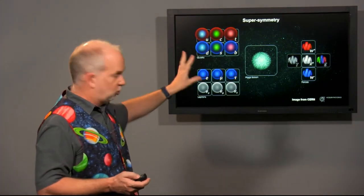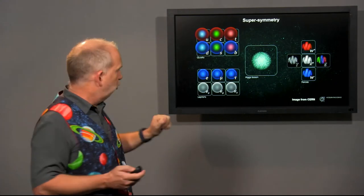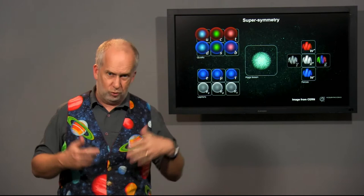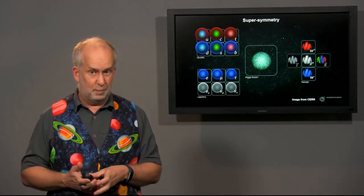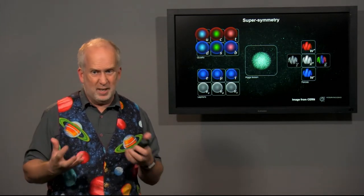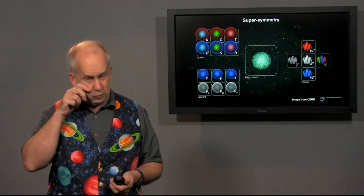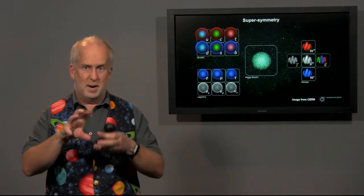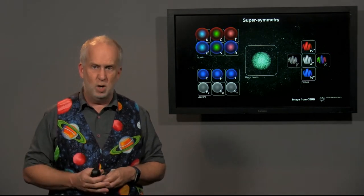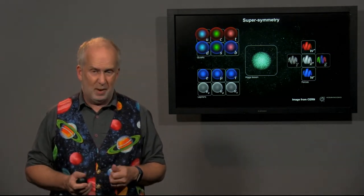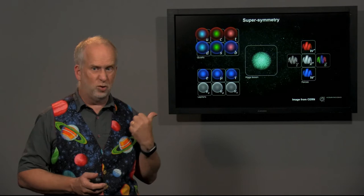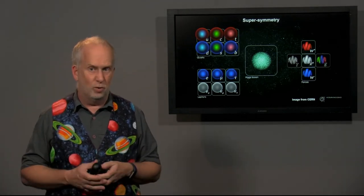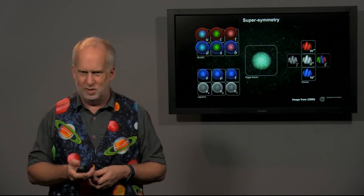So supersymmetry was invented not to explain dark matter, but to solve another problem, several other problems. But the main one is, the Higgs boson is the particle that gives all the other particles in the standard model their mass. And if you try and calculate how heavy a Higgs boson should be, you've got various physical constants, and you combine them to make a mass. And if you do, you get a very large mass, about 10 to the 17 bigger than the Higgs boson's real mass. If that was true, all the particles in the universe would weigh 10 to the 17 times more than we do, and we'd be in a very strange universe indeed.